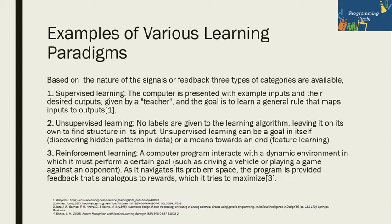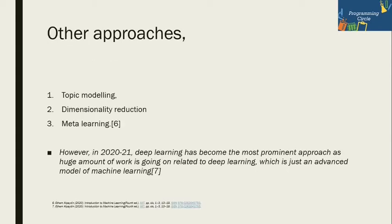The third type is reinforcement learning. It is when a computer interacts with a dynamic environment in which it must achieve a certain goal as it navigates its problem space. Feedback is provided that is analogous to a reward — every time feedback is provided and based on that, a reward is generated.